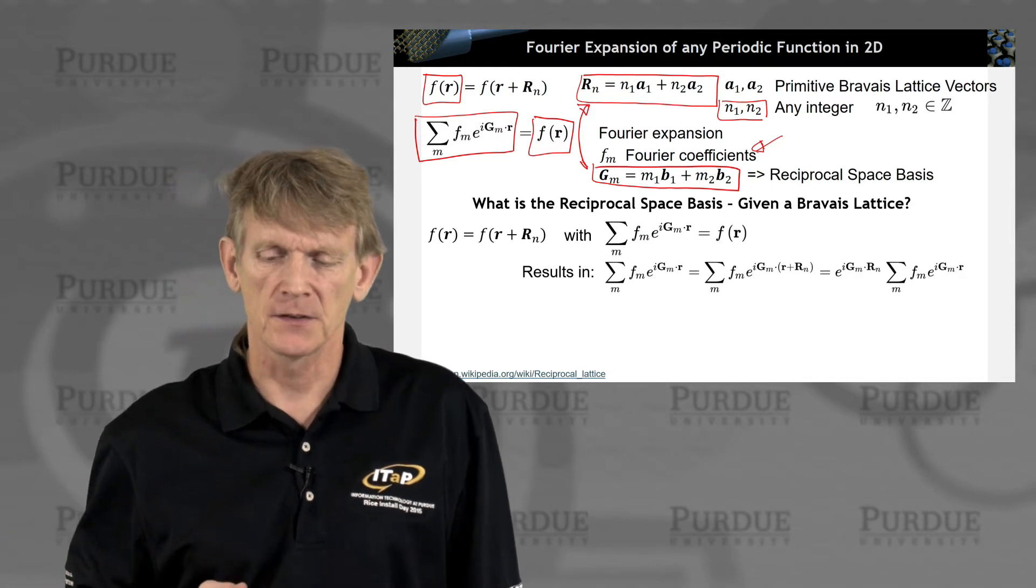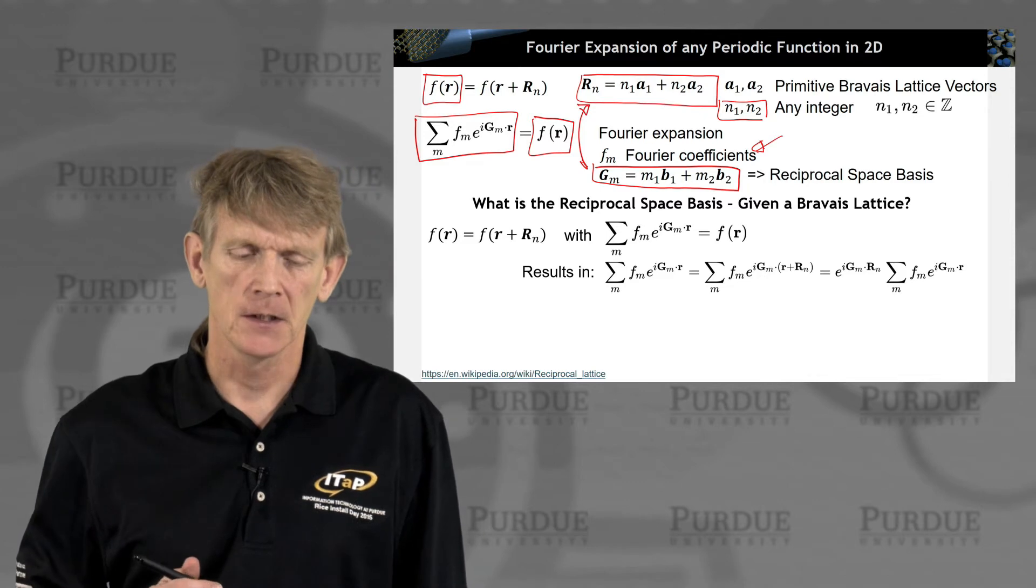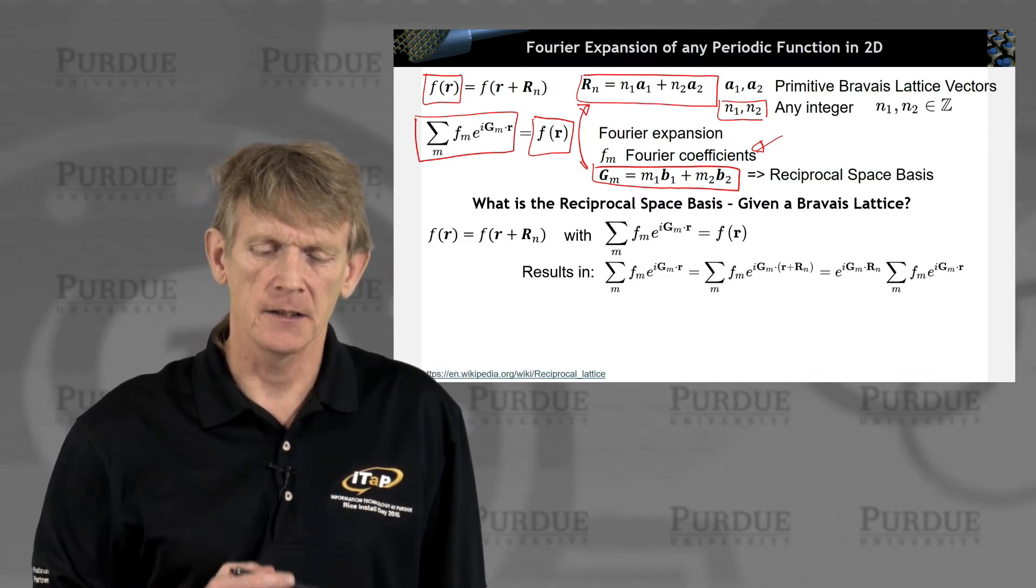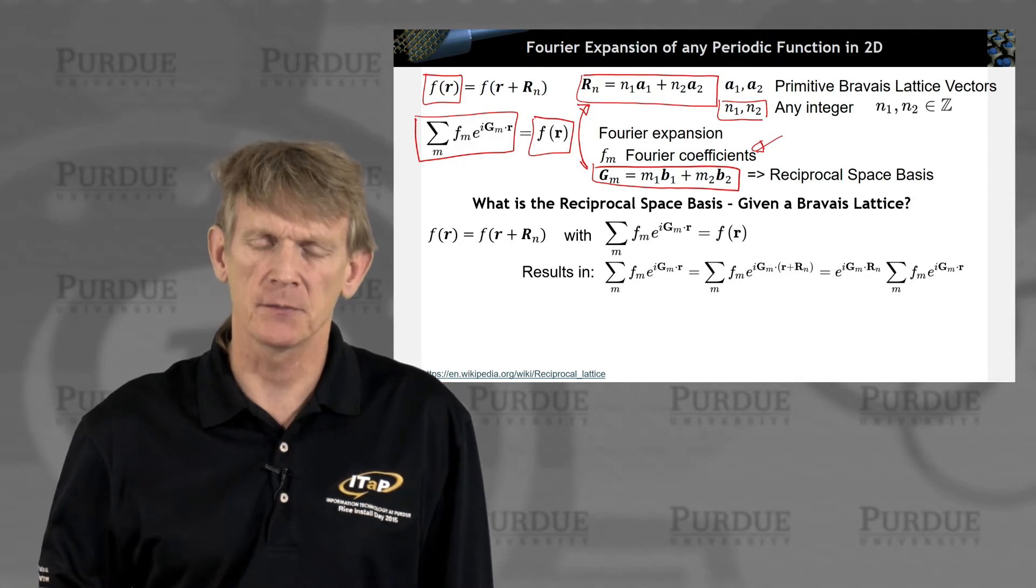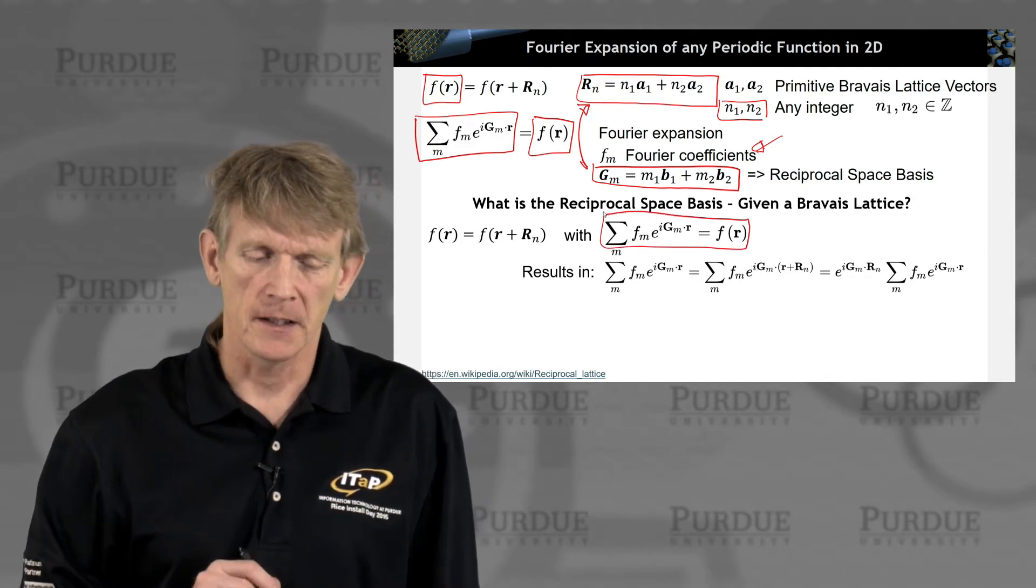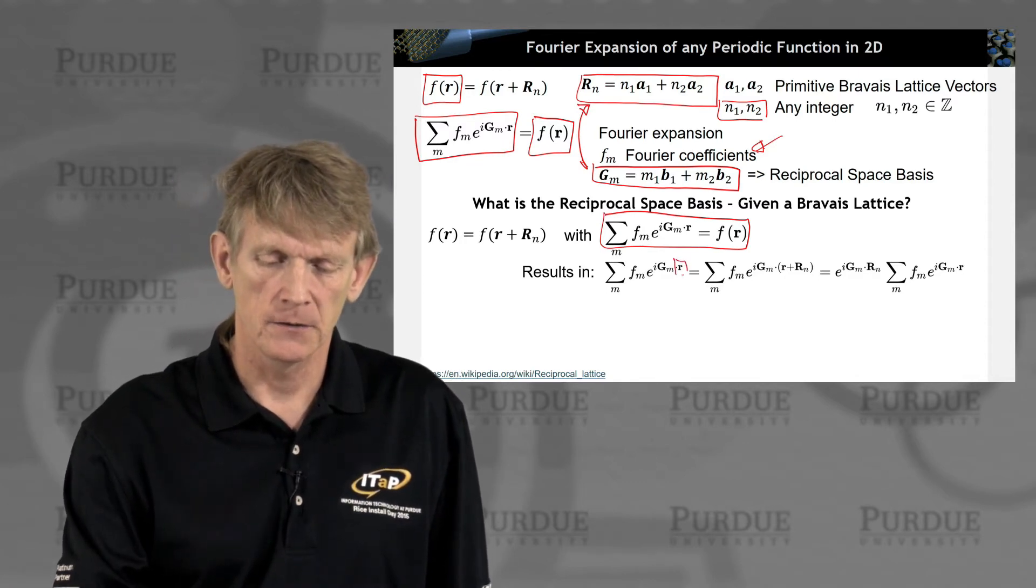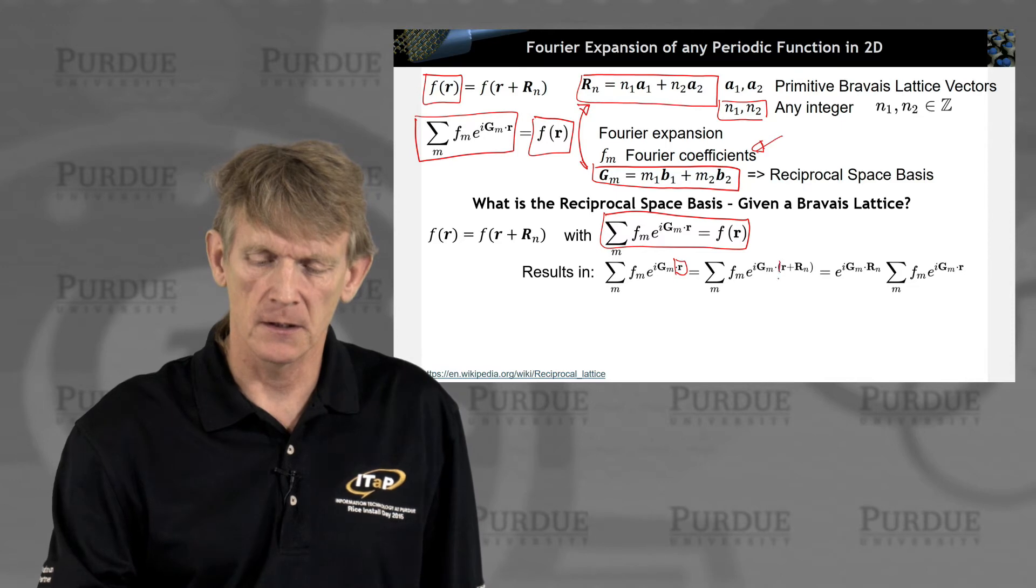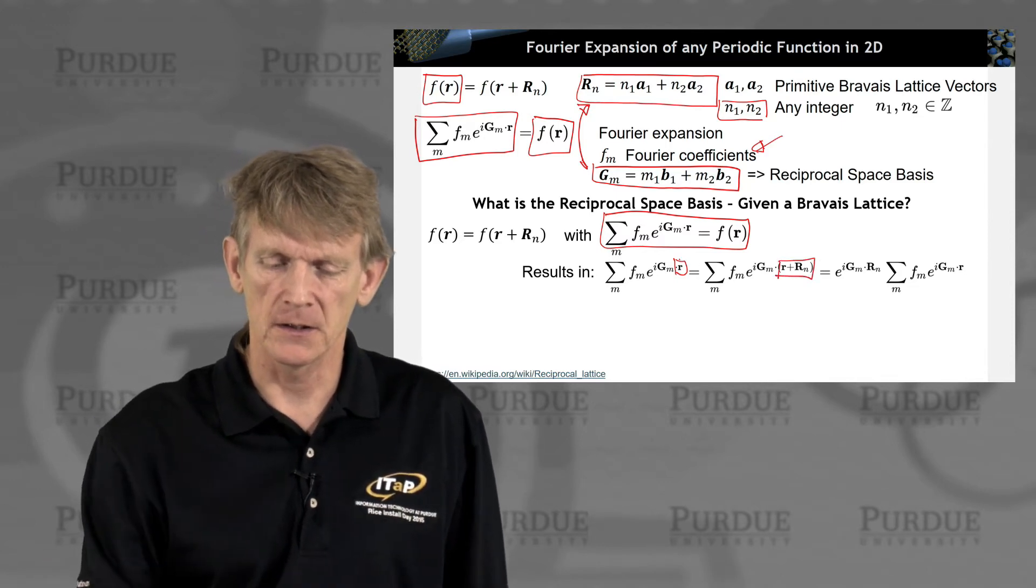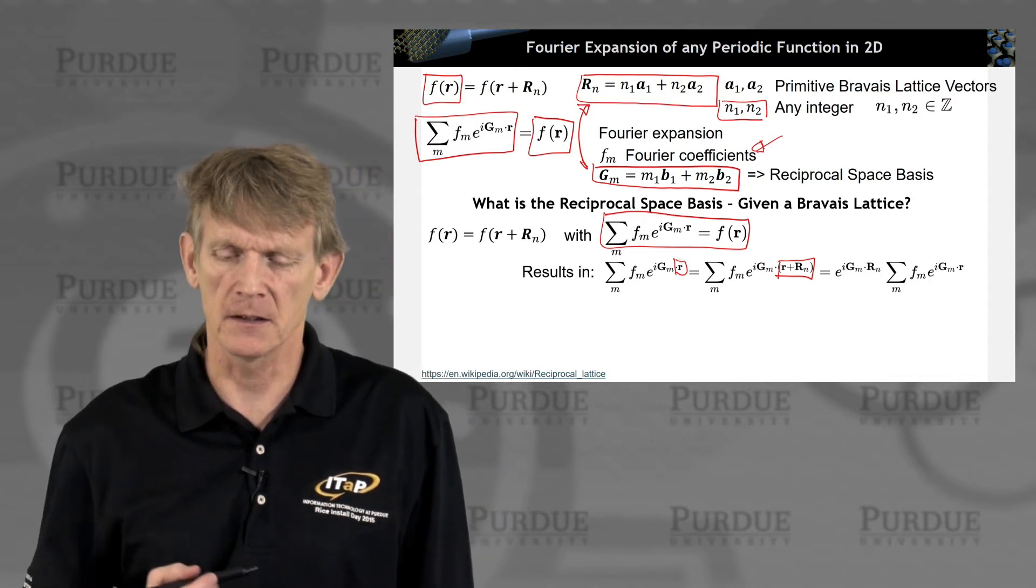Let's write down some expressions that lead us in the right direction. If we want to expand the function f(r) in terms of reciprocal base spaces like this, and we know that f(r) repeats, we can plug in the term here, and we know that these two, the left and the right hand side here, must be identical because the result is physically the same.